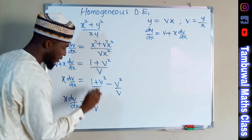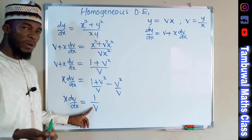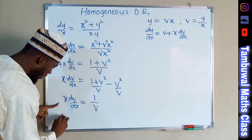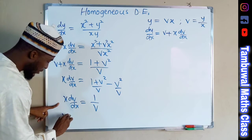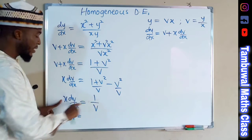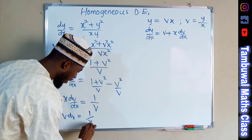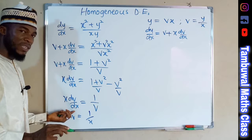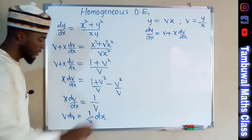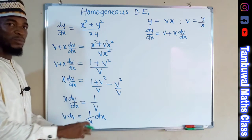The common denominator is v. Now we separate the variables: v is dividing, so once it crosses over it will multiply, giving v dv on the left. We take x to the right-hand side — it is multiplying, so it divides — giving 1 over x dx on the right. The variables are now separated.